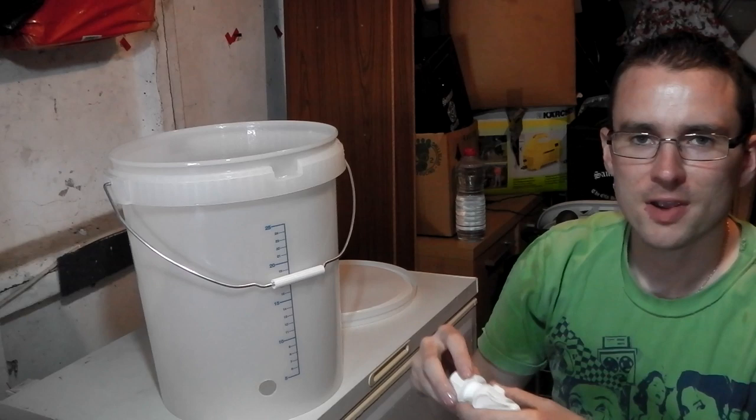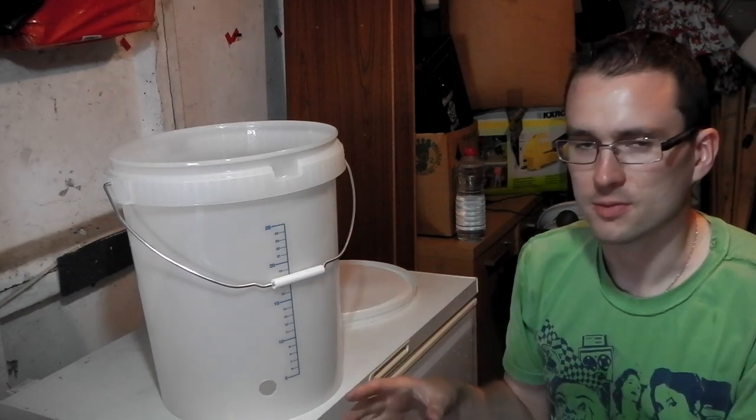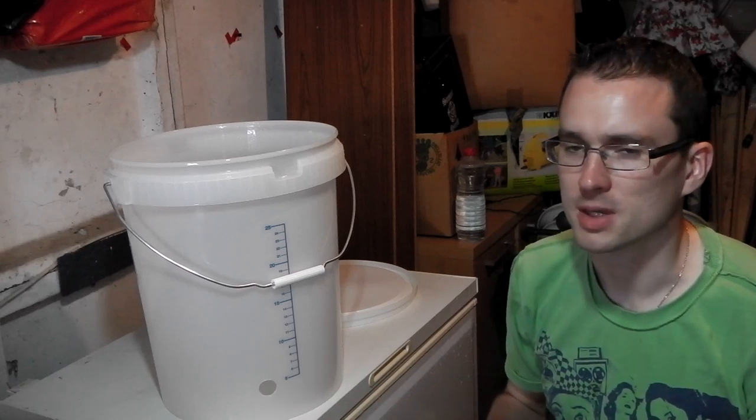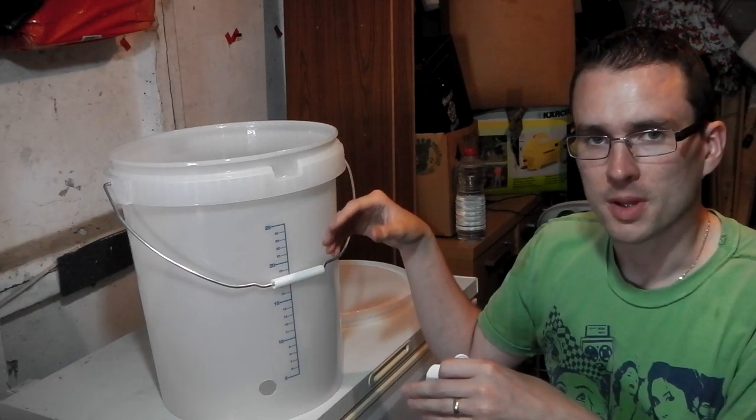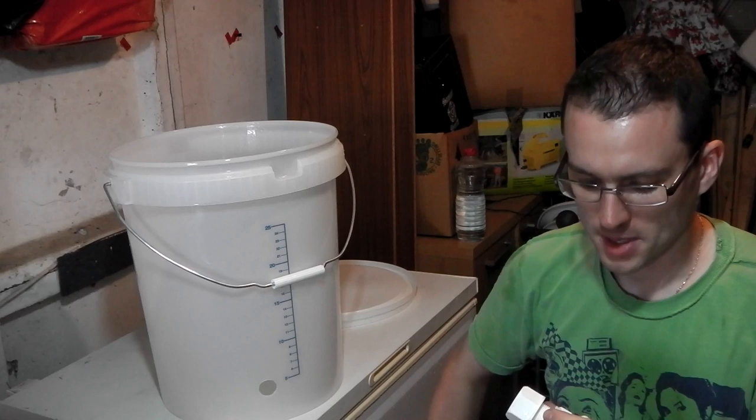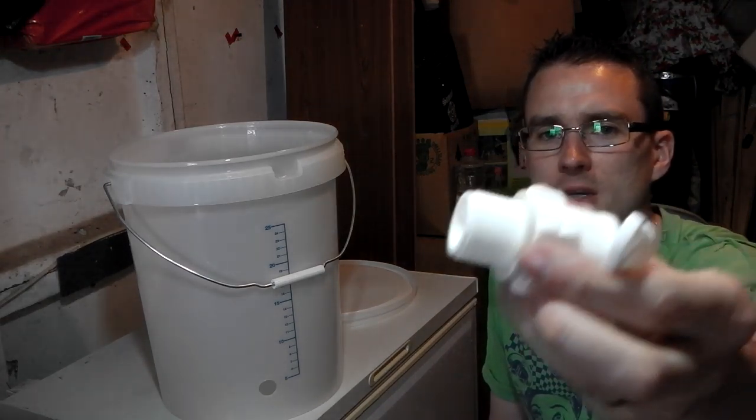In theory you could bottle straight from primary, but the recipe that I've had in my fermenter is a raspberry wheat beer, so there's going to be a lot of stuff I want to filter out. So I'm going to rack straight onto the bottling bucket. And it has a little rubber gasket just there.